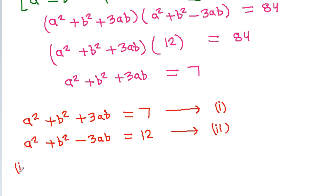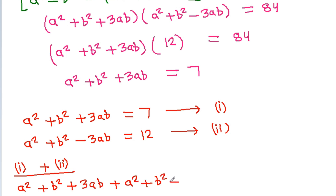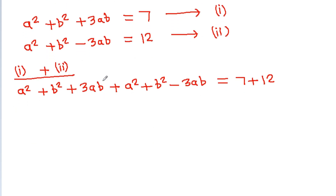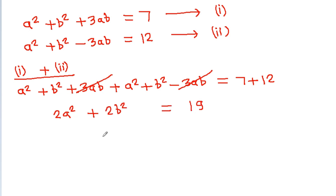If we add equation 1 and equation 2, then (a² + b² + 3ab) + (a² + b² - 3ab) = 7 + 12, so 2(a² + b²) = 19, therefore a² + b² = 19/2.